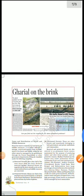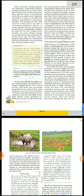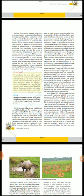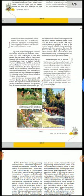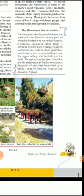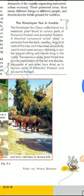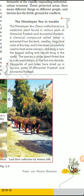We are continuing with Chapter 2, Forest and Wildlife Resources. From last time we are moving ahead. We discussed about the Himalayan Yew, which is a medicinal plant found in various parts. It is used to get taxol, which is an anti-cancer drug. Because of over-exploitation over the last decade, many of the trees were exploited and dried up.